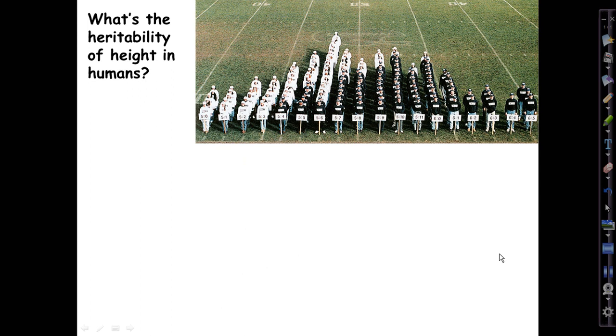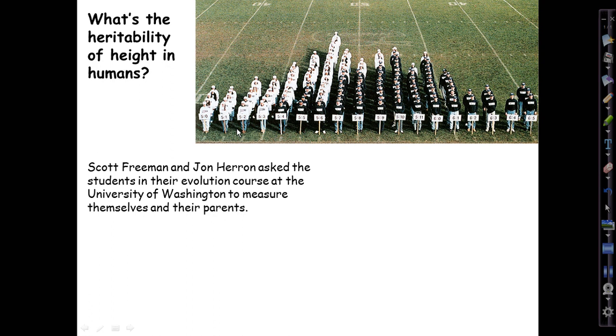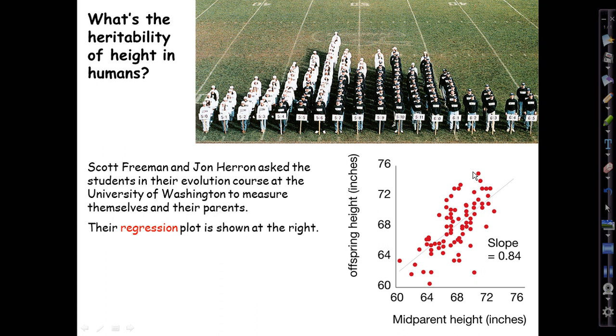So let's do an example, the most famous of all. What's the heritability of height in humans? Here's, I think you've seen this living histogram of evolution students before, demonstrating variation in human height in feet and inches. Scott Freeman and John Heron did an experiment in their evolution course at the University of Washington a number of years ago. They asked the students to measure themselves and their parents, and here's their data set with a somewhat larger sample. You can probably barely see this faint regression line shot through all those points. It has a slope of 0.84.